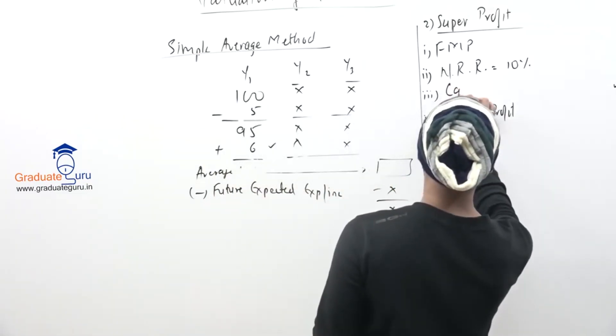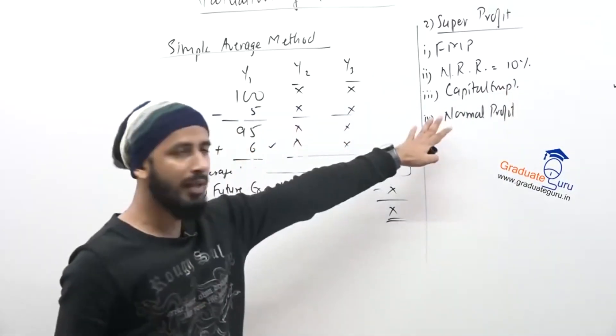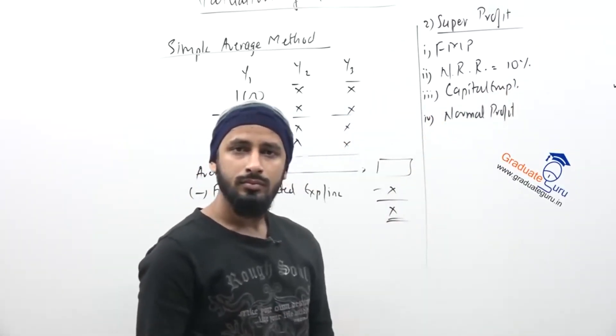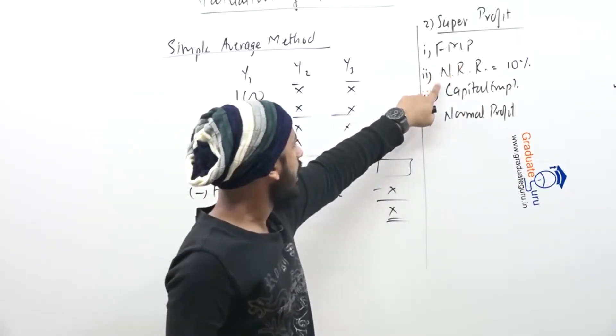Sir, I will tell you about it. I will tell you about it. That is your capital employed. Shortcut, I will tell you about it. This is my profit. Normally, the rate of return in the market is 10%.